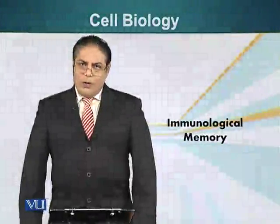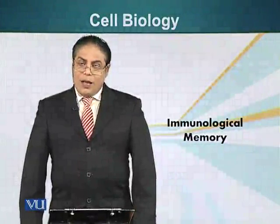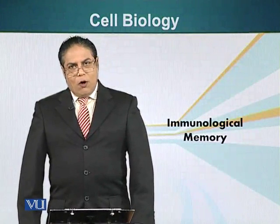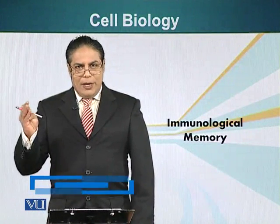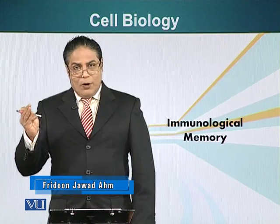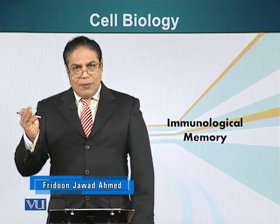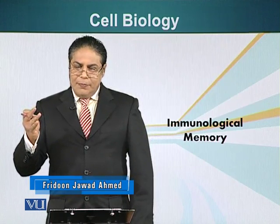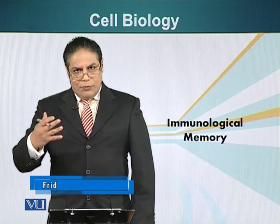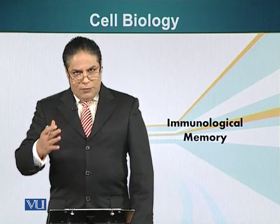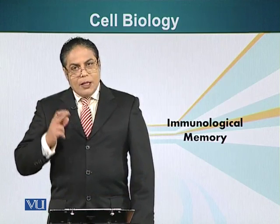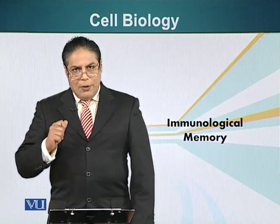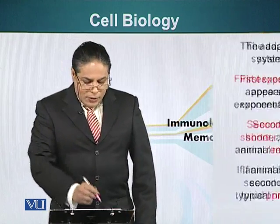When we first started talking about immunology, I pointed out four very important features of the immune system: memory, distinction of self and non-self, diversity, and specificity. Let's look at three of these features sequentially. The first feature we are going to talk about is immunological memory.